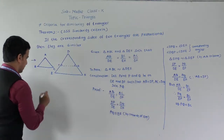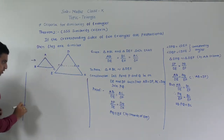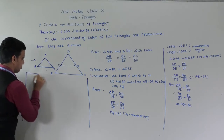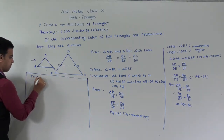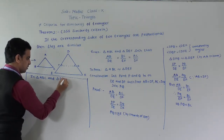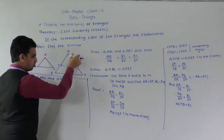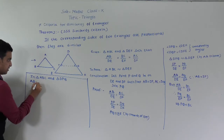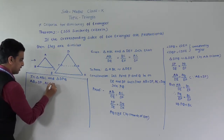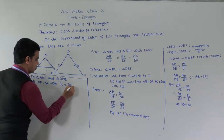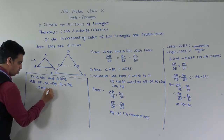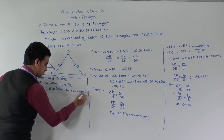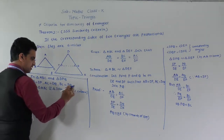Now in triangle ABC and triangle DPQ: AB equals DP, AC equals DQ (by construction), and BC equals PQ. Therefore triangle ABC is congruent to triangle DPQ by SSS congruence criteria. Since triangle ABC is congruent to triangle DPQ, and triangle DPQ is similar to triangle DEF, we conclude that triangle ABC is similar to triangle DEF.